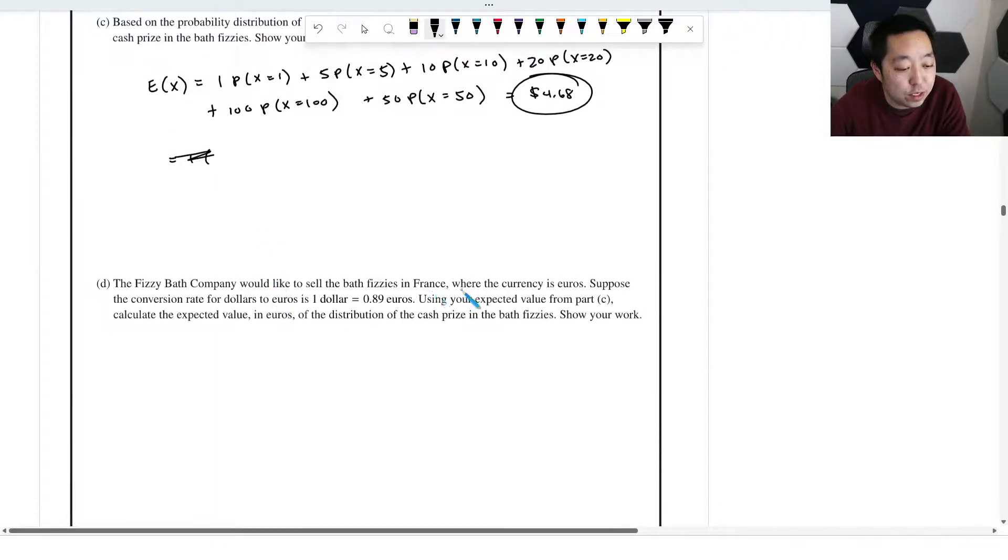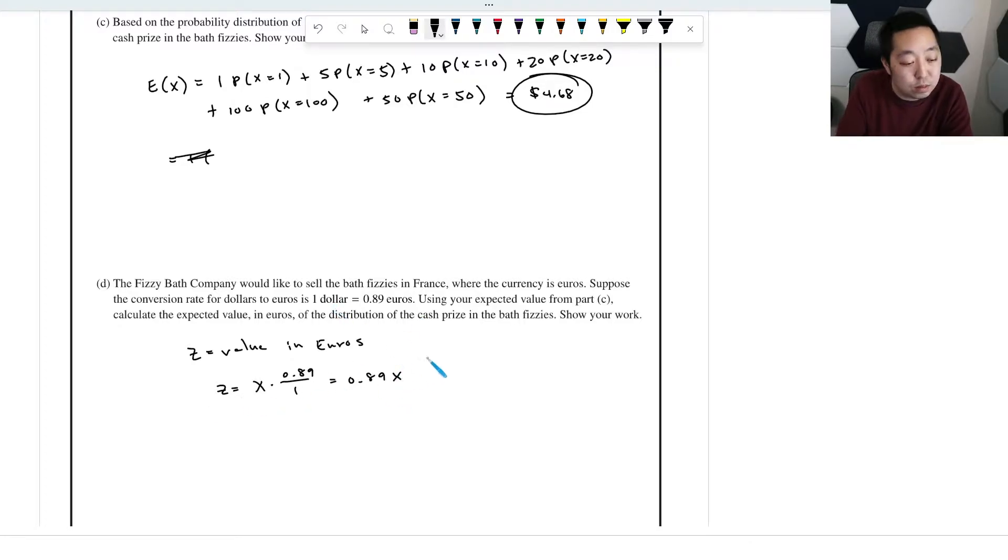The Fizzy Bath Company would like to sell bath fizzies in France with the currency as euros. Suppose the conversion rate from dollars to euros is 0.89 euros per dollar. Using your expected value from part c, calculate the expected value in euros. So let's say z is the value in euros. How is z related to x? You would take the dollar amount and multiply it by 0.89 euros per dollar, so it's going to be 0.89x. So the expected value of z is just the expected value of 0.89x. And the rules for expected values is they just kind of pop out, times the expected value of x. So that's 0.89 times $4.68. That will tell us 4.1652 euros. Don't forget the units.